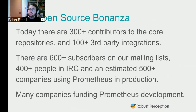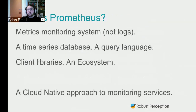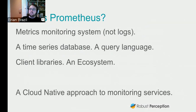We figure there are over 500 companies using Prometheus in production, and several companies funding Prometheus development. A recent stat showed that Prometheus is 56th in the world for open source contributions — right at the top is Linux itself. So what is Prometheus? It's a metrics monitoring system. It doesn't do logs, it doesn't do tracing, it's not a profiler. At its core it's a time series database with a query language, client libraries to get data in, and a general ecosystem.